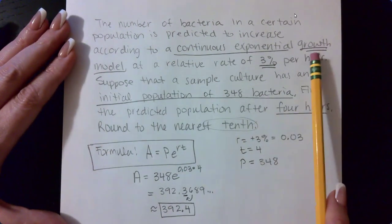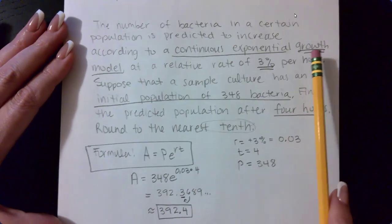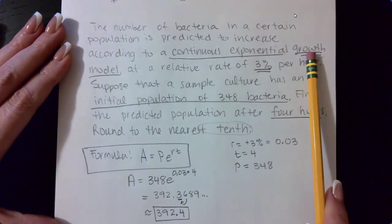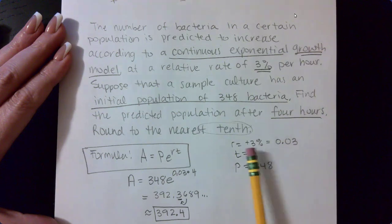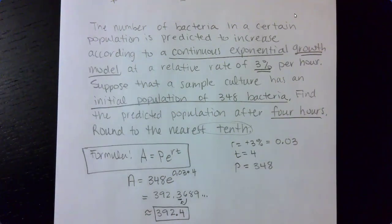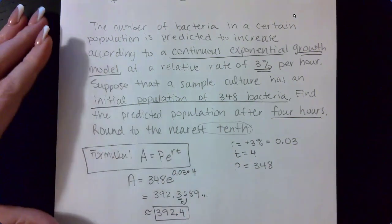Be careful because if in ALEKS they give you a similar word problem, but it says the word decay. If it says the word decay, then your rate should be a negative, and then this number would be a negative decimal that goes into the exponent.